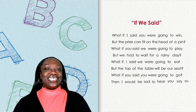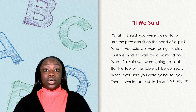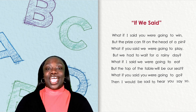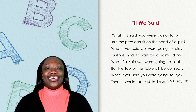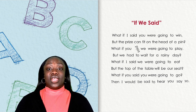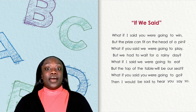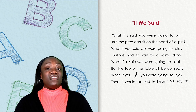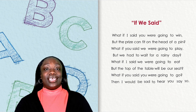As I read the poem one last time, pay close attention to our mystery words: 'you,' 'said,' and 'were.' What if I said you were going to win, but the prize can fit on the head of a pen? What if you said we were going to play, but we had to wait for a rainy day? What if I said we were going to eat, but the top of the table will be our seat? What if you said you were going to go, then I would be sad to hear you say so.